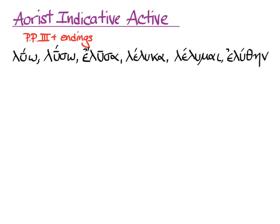Luo, luso, elusa, leluca, lelumai, eluthēn. And let's look at that third one. It already has the augment attached, and so for the indicative, all we have to do is take off the alpha at the end. We keep the augment because we're doing the indicative. In other non-indicative forms that use the third principal part, we'd have to take off the epsilon for non-indicative uses, but we're not doing that right now.